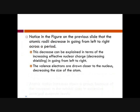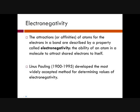Ion size is opposite to atomic radius trends. When you add or subtract electrons, that changes the size: losing an electron makes an ion smaller, and gaining an electron makes it larger. We'll explore that in a moment. Electronegativity is the last trend to cover.